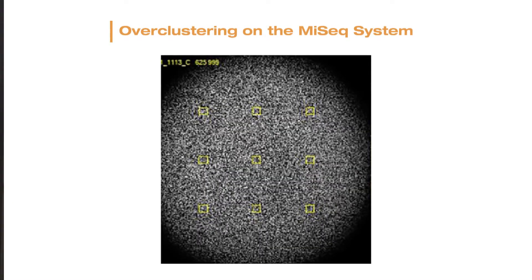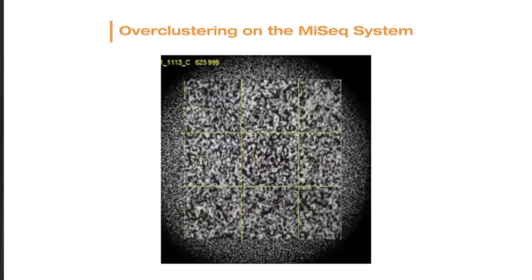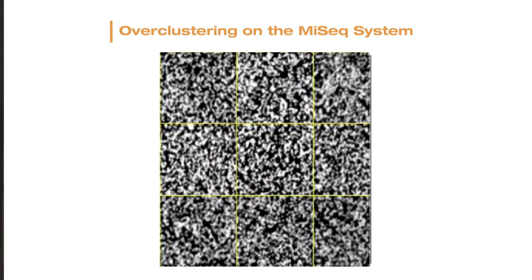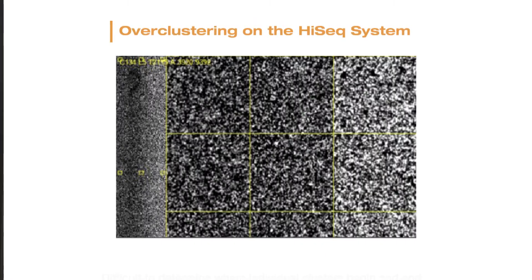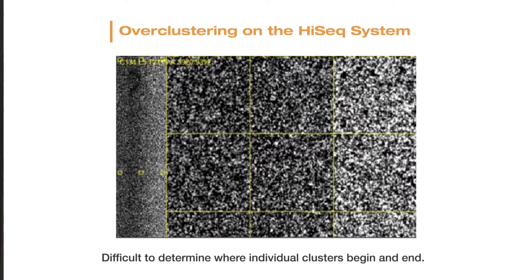Over clustering increases signal brightness, which makes it difficult for the instrument's optics to find the correct focal plane. This can cause poor cluster identification, known as template generation, poor registration, and other image analysis issues.